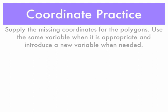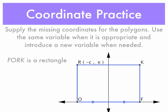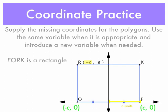Finally, let's take a look at some coordinate practice. I'll give you a quadrilateral and you have to supply the missing coordinates. Use the same variable when appropriate, and only introduce a new variable when you need to. This quadrilateral FORK is a rectangle. The only coordinate given is point R at negative C, E. The negative C value indicates this length is C units in the negative direction, so O is C units in the negative X direction. The congruence markings show F is C units in the positive X direction, and K also has C as an X coordinate.